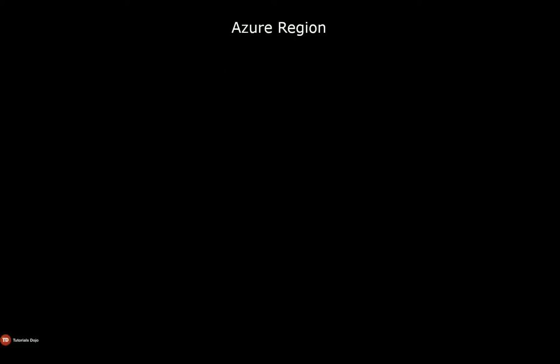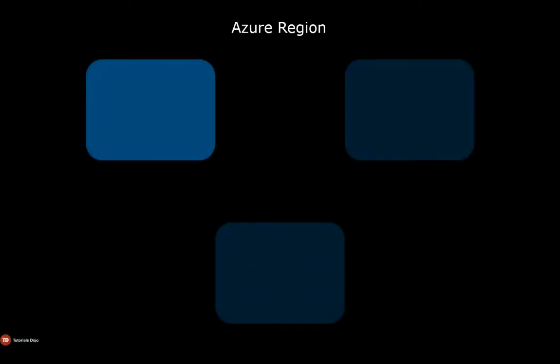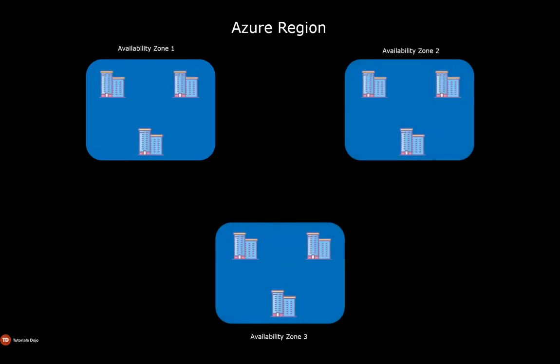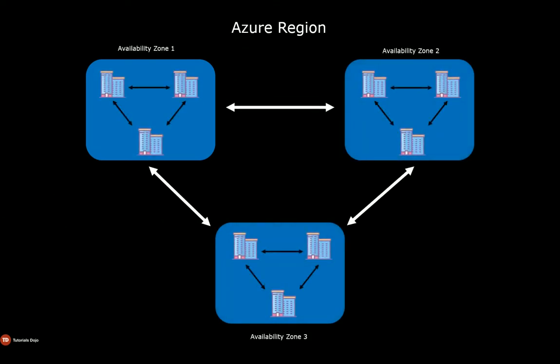An Azure region is a set of data centers deployed within a latency-defined perimeter and connected through a dedicated regional low-latency network. An Azure region allows you to have highly available applications by leveraging multiple availability zones.